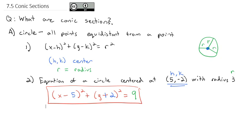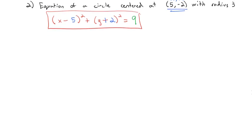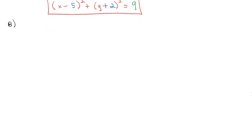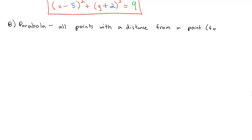A circle is the most basic of the conic sections, and we don't actually spend much time on it. So let's go to the next most interesting conic section: the parabola. A parabola has a very specific definition that also has to do with distance. A parabola is all the points where the distance from a point — called the focus — equals the distance from a line called the directrix.